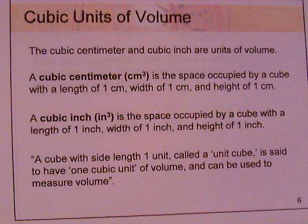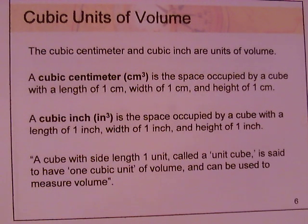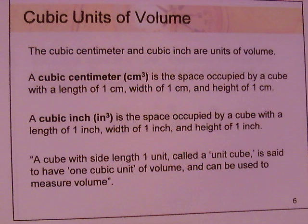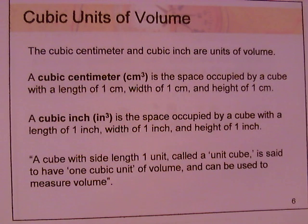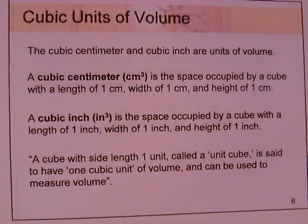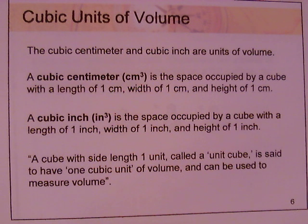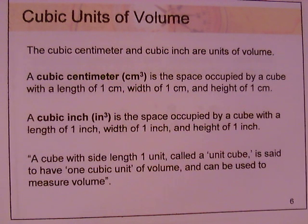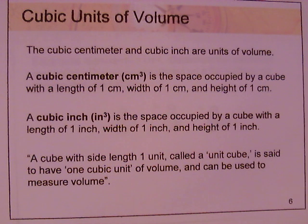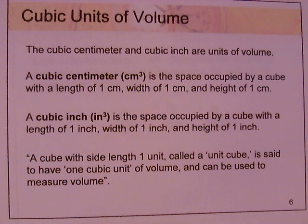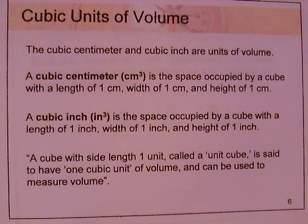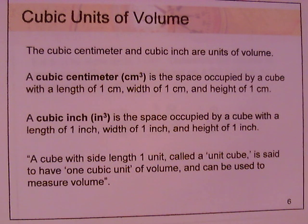The cubic centimeter and cubic inch are units of volume. A cubic centimeter (cm³) is the space occupied by a cube with a length, width, and height of one centimeter. A cubic inch (in³) is the space occupied by a cube with a length, width, and height of one inch. A cube with side length one unit is said to have one cubic unit of volume.